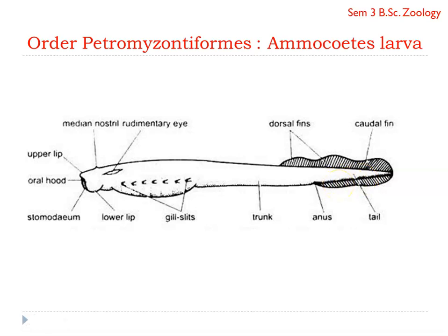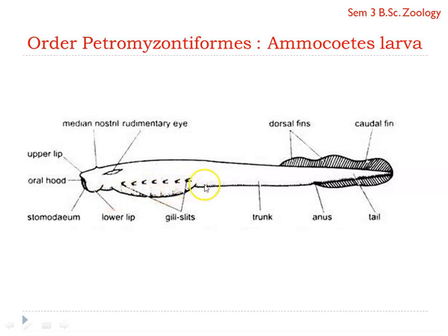The body is supported by an unconstricted notochord. Externally, the mouth is guarded by an upper lip as well as the lower lip, and also the oral hood. This oral hood structure is similar to that of Amphioxus. They have a rudimentary pair of lateral eyes, but they are functionless and hence the larvae is blind. They also possess a median nostril on the top of the head, and seven pairs of gill slits opening on the lateral sides of the pharyngeal region.